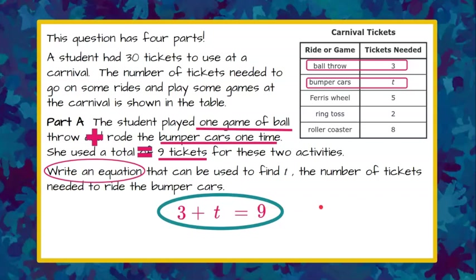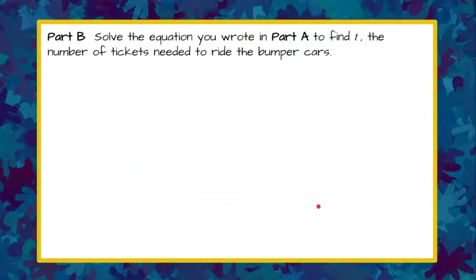Here's Part B. Part B asks us to solve the equation that you wrote in Part A to find and solve for T, the number of tickets needed to ride the bumper cars. Please pause now and come back when you're done.